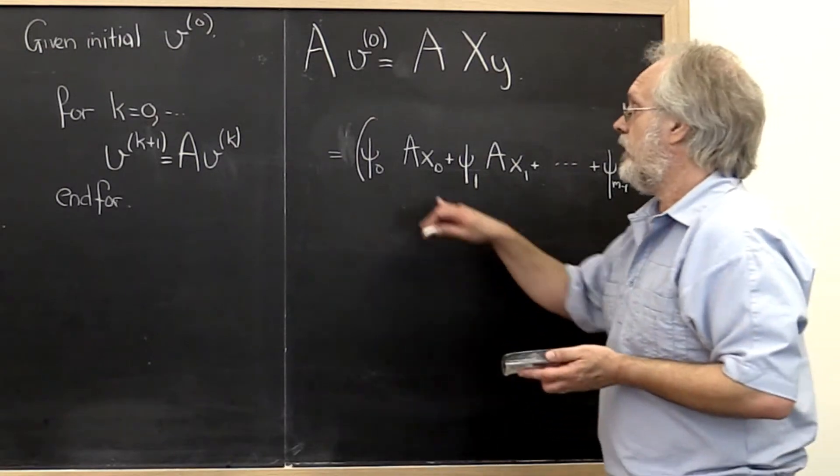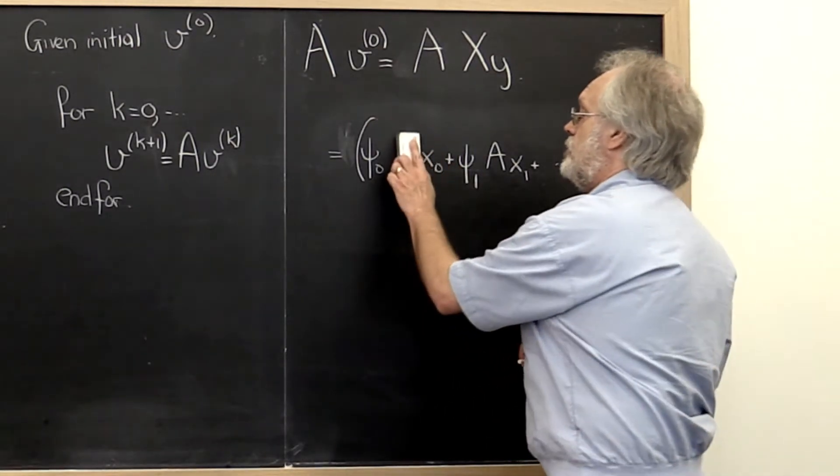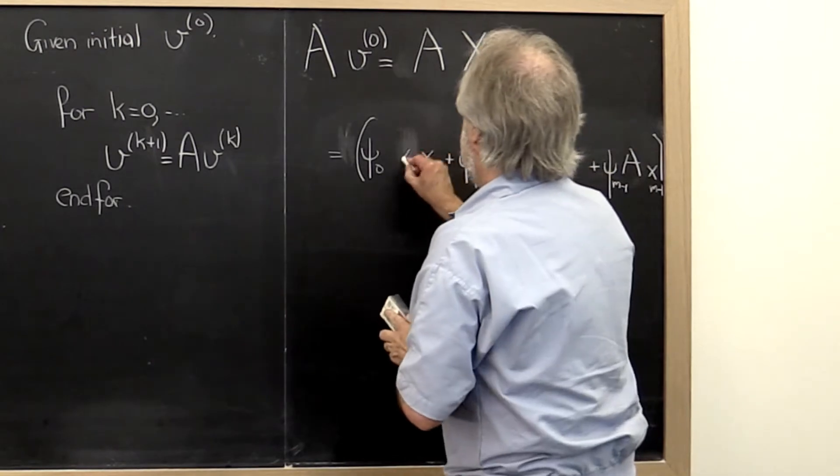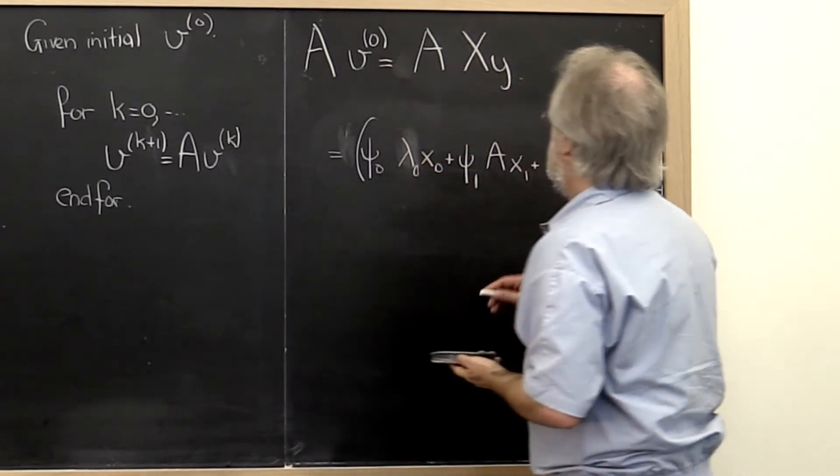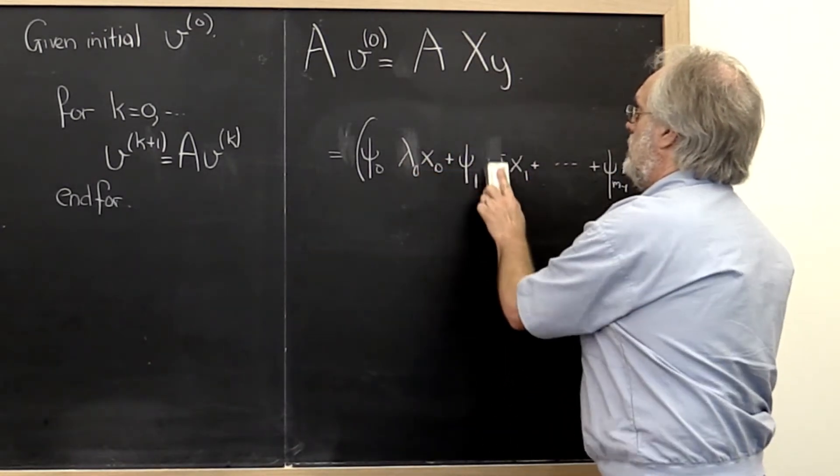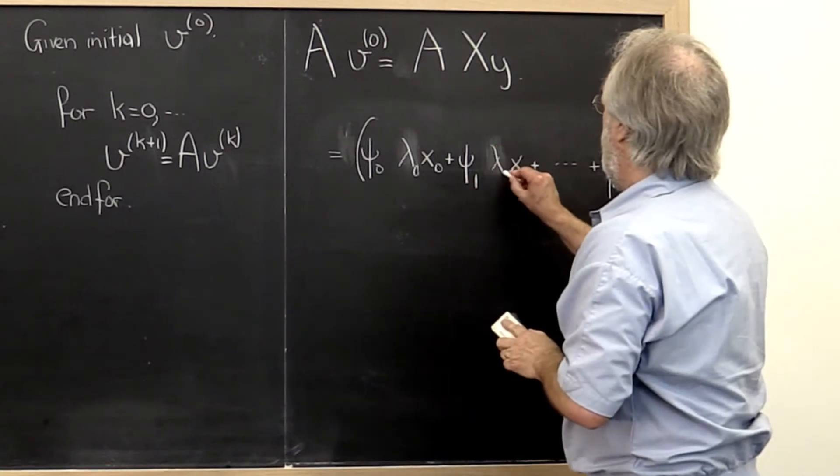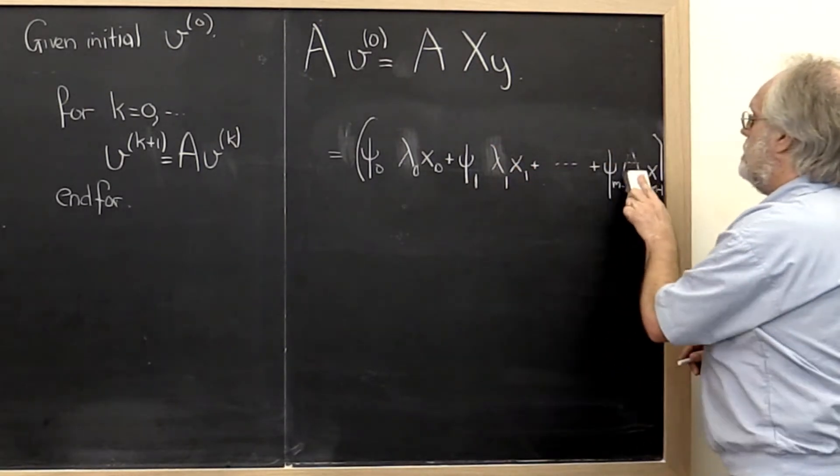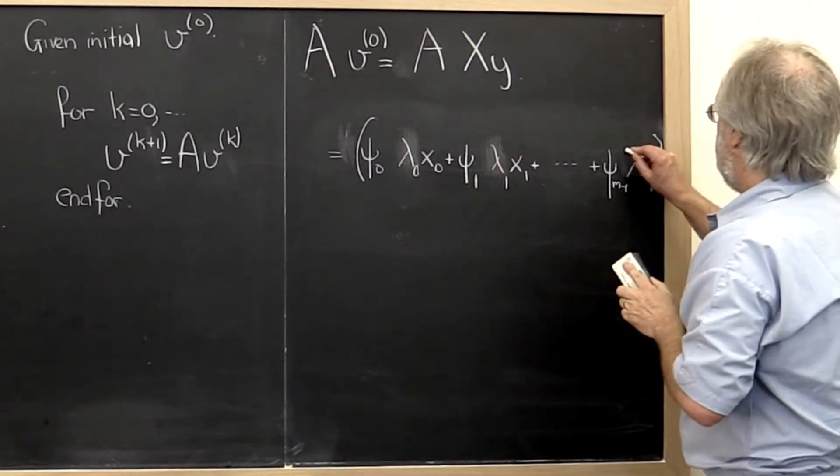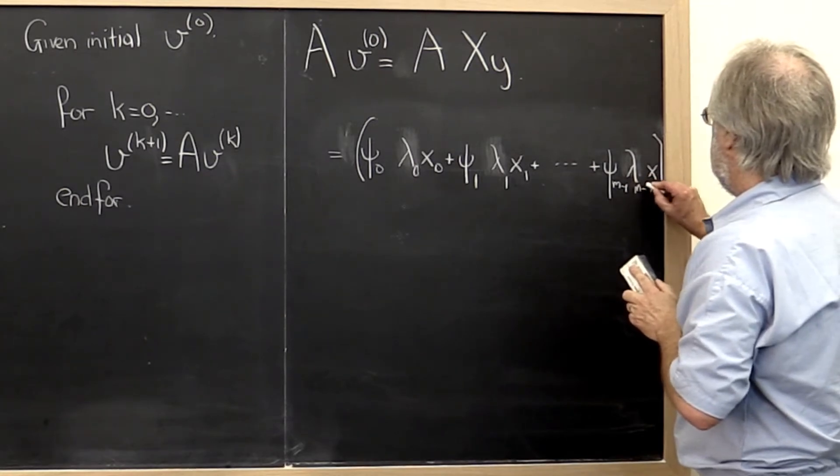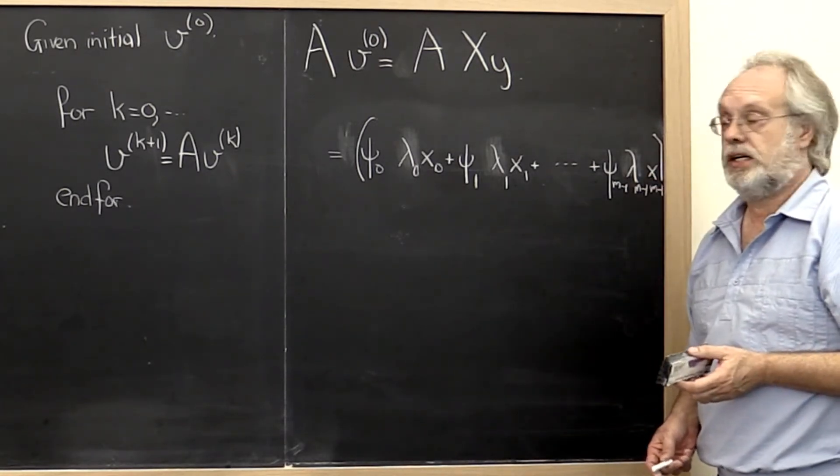However, we know that A times x0 is just lambda 0. And this here is just lambda 1. And this is just lambda m minus 1.